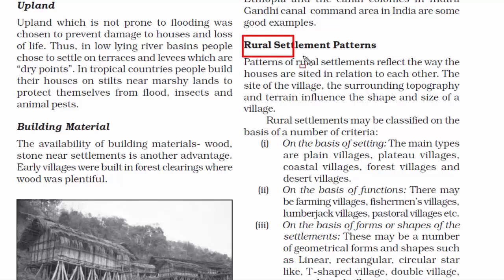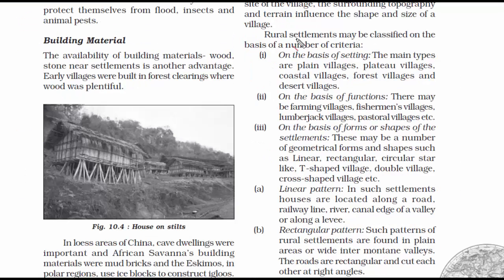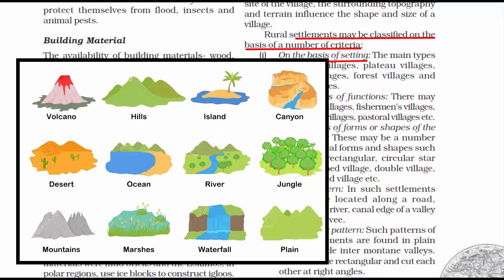Now we read about rural settlement patterns. Whenever you hear the word settlements, think about how humans are settled and how their houses are constructed at a given location. Rural settlements are categorized on certain criteria. The first is on the basis of setting — meaning the environmental setting, the physical features or geographic location of the rural settlement. You will find villages in plains, plateaus, coastal areas, mountains, forests, and deserts — these are the physical features being referred to.